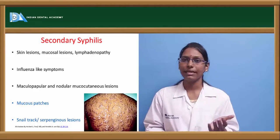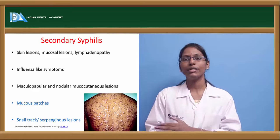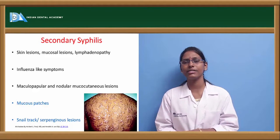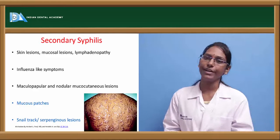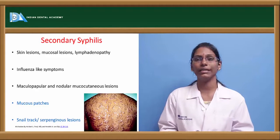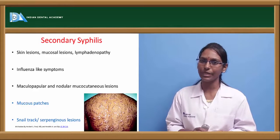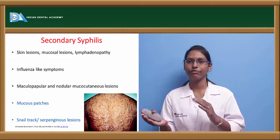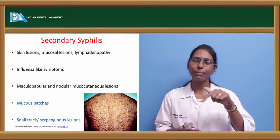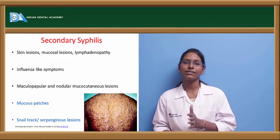In 3 to 8 weeks, primary syphilis heals and the patient may enter the secondary stage. In secondary syphilis, about 30% of patients may still retain the chancre. Other manifestations include skin lesions, mucosal lesions, and lymphadenopathy. Patients exhibit influenza-like symptoms and maculopapular and nodular mucocutaneous lesions. Characteristic mucous patches are present — red, painless, erosive lesions taking the form of snail tract ulcers or serpiginous ulcers, named for the snail-trail or snake-like appearance of the lesions.